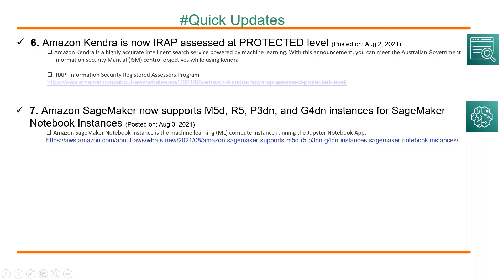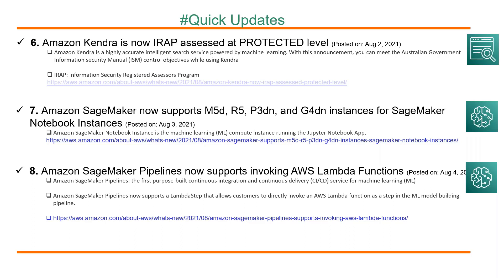SageMaker notebook instances are machine learning compute instances running the Jupyter notebook app. Amazon SageMaker Pipelines now supports invoking AWS Lambda functions. SageMaker Pipelines is the first purpose-built CI/CD service for machine learning. These pipelines now support a Lambda step that allows customers to directly invoke a Lambda function as a step in their ML model building pipeline, as long as it completes in 10 minutes.